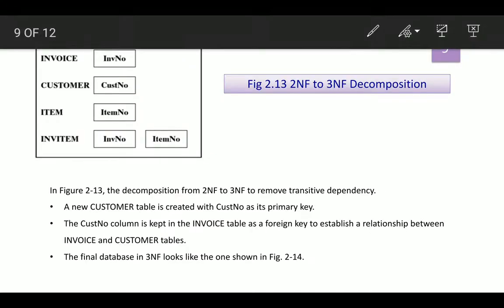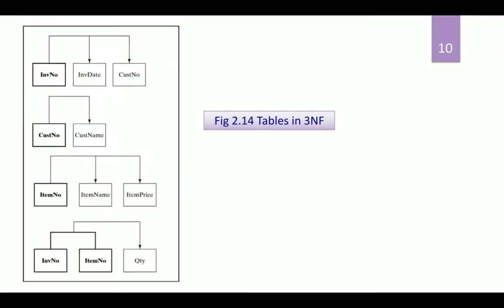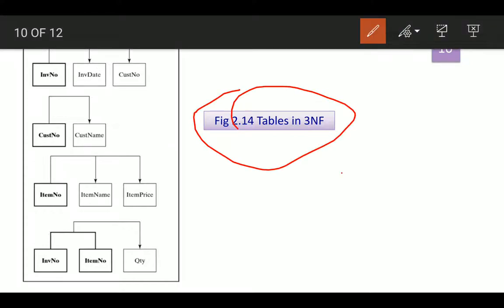This shows the decomposition from second normal form to third normal form, resulting in four tables: invoice with invoice number as the key, customer with customer number as the key, item with item number as the key, and invoice-item with a composite primary key. A new customer table has been created with customer number as the primary key, which is kept as a foreign key in the invoice table to establish a relationship between both tables. The final database in third normal form is consistent.